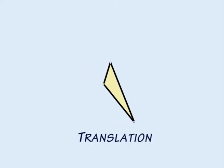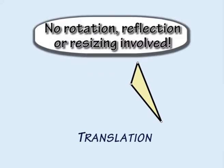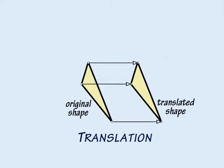Translating a shape means moving it without rotating, reflecting or resizing it. Every point on the shape must move the same distance and in the same direction. For example, this triangle has been moved three centimetres to the right in a horizontal direction.